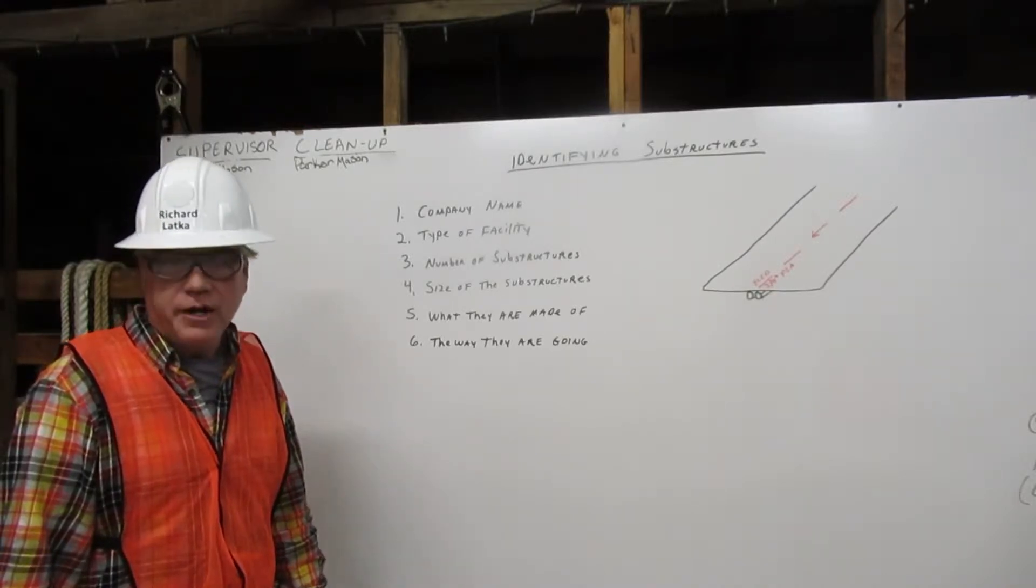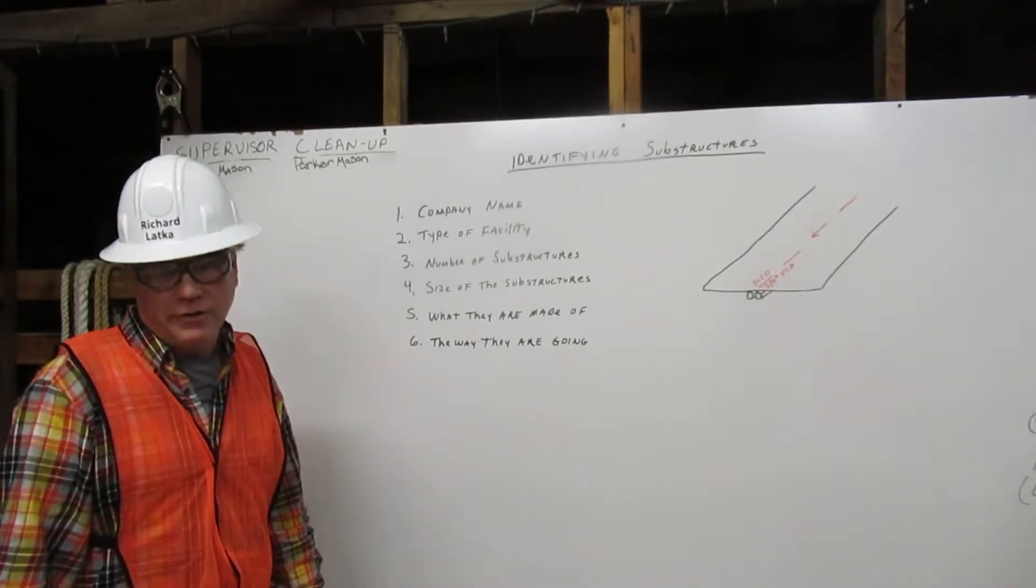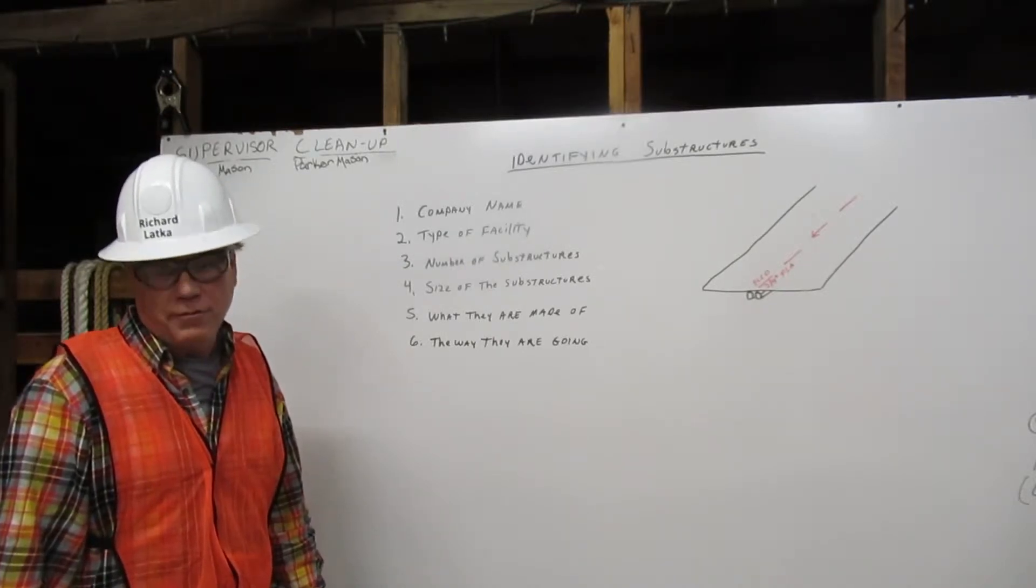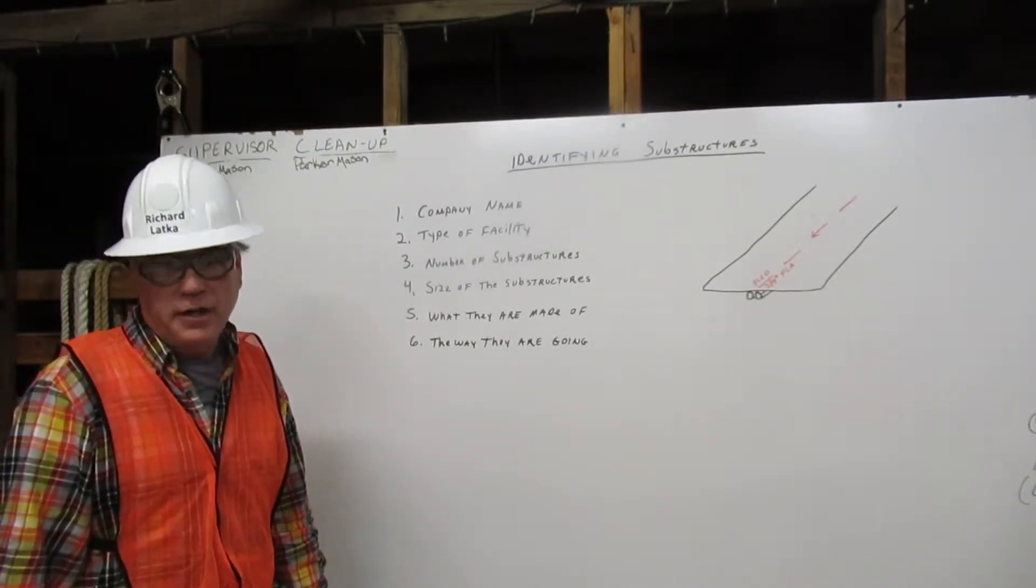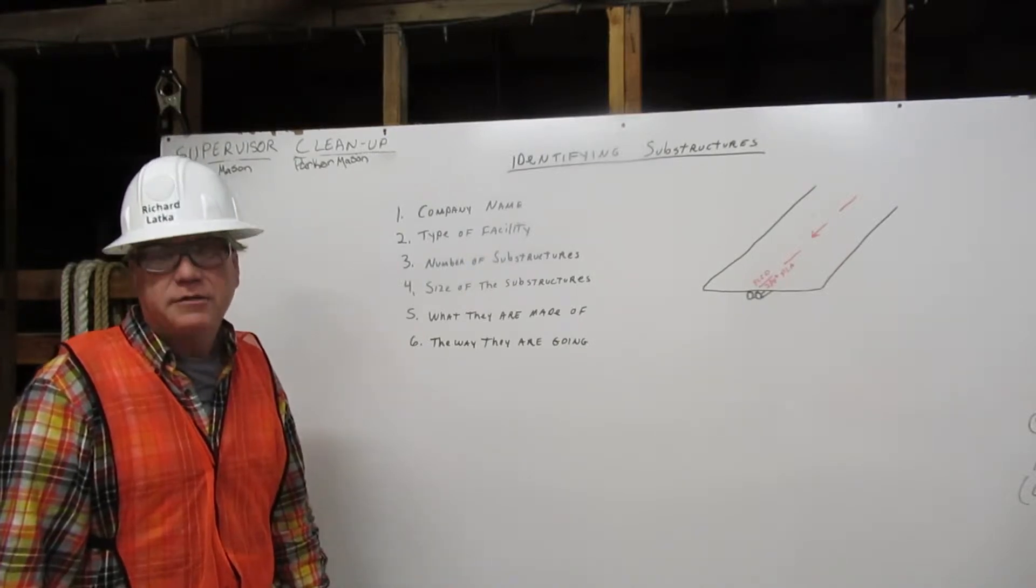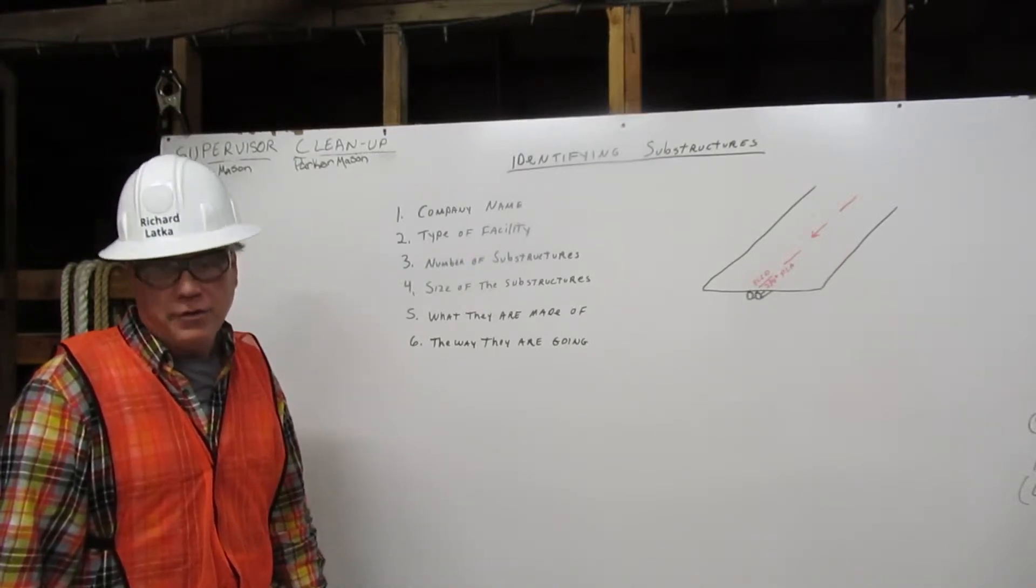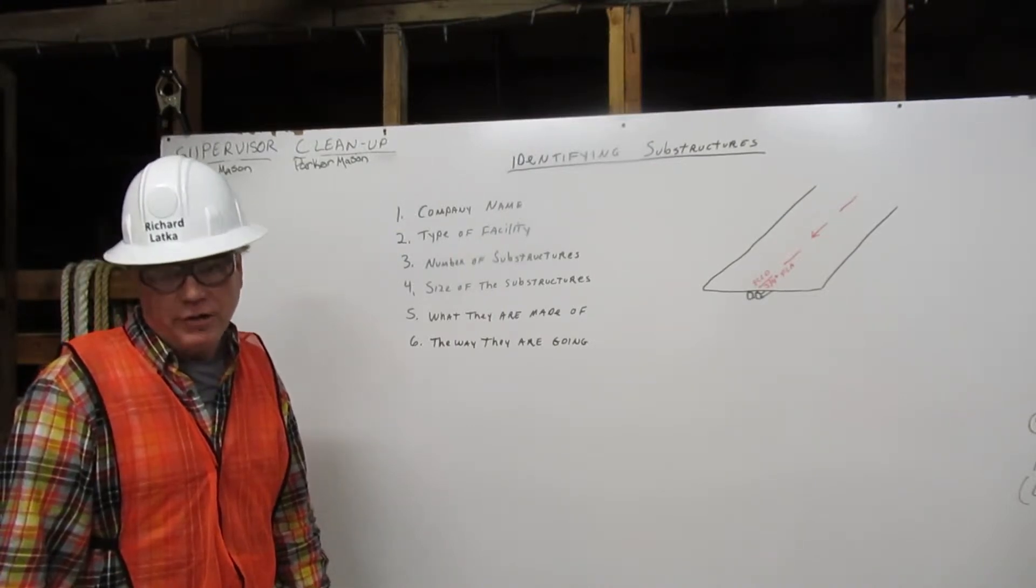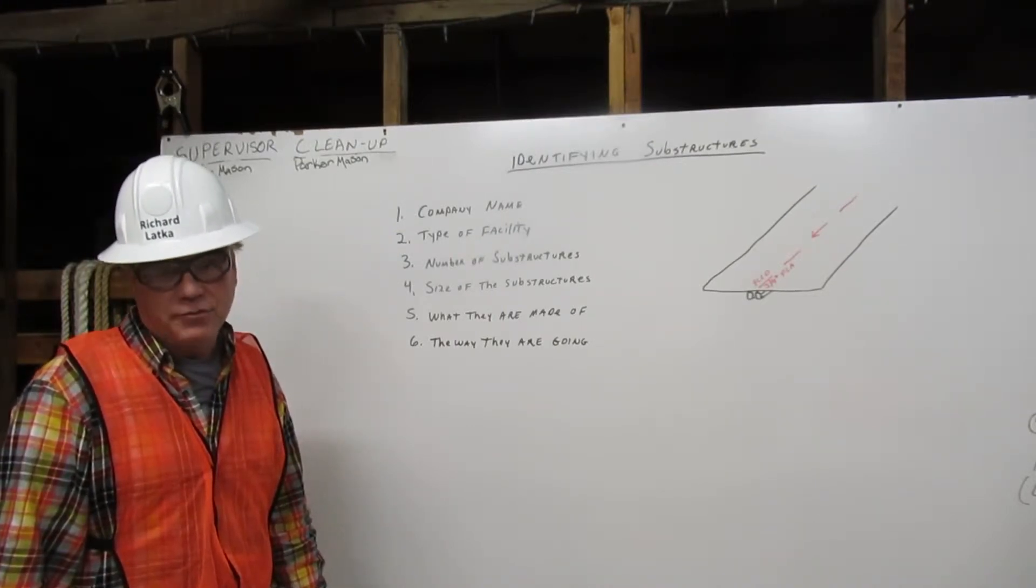Facility operators are required to provide excavators with the information regarding the substructures. They leave the markings that tell us the company name, type of facility, number of substructures, size of substructures, what they are made of, and the way they are going. Here I'm going to explain to you how to identify these substructures.